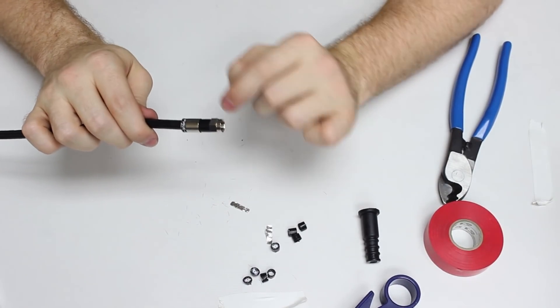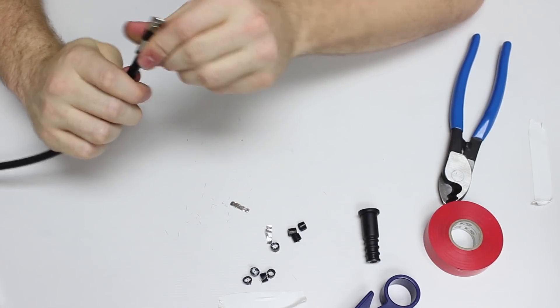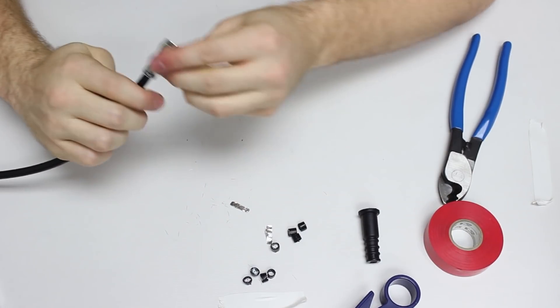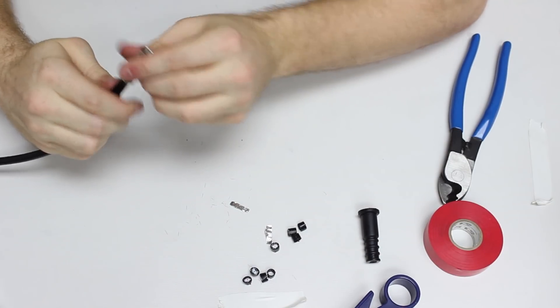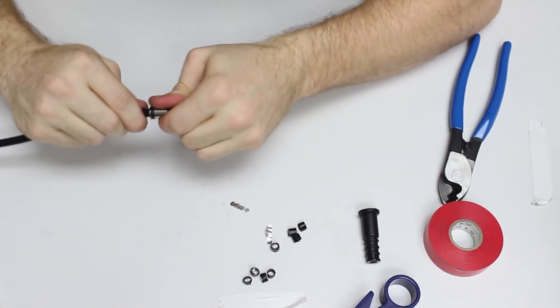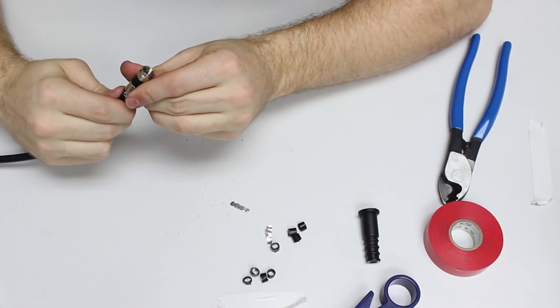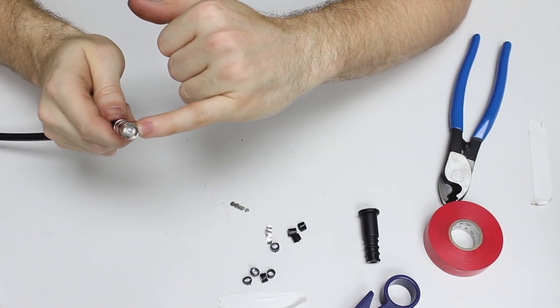Alright, so once you have your RG6 connector actually popping on, then you're just going to go ahead and push that down. It doesn't take much force. You just want to be careful not to over push. We're simply trying to get that dielectric flush. So once we have the dielectric flush on the inside connector, we're going to go ahead and take our crimpers, place this inside, and clamp that down.